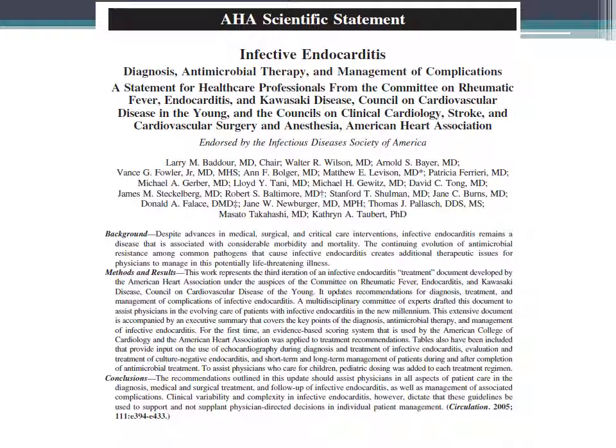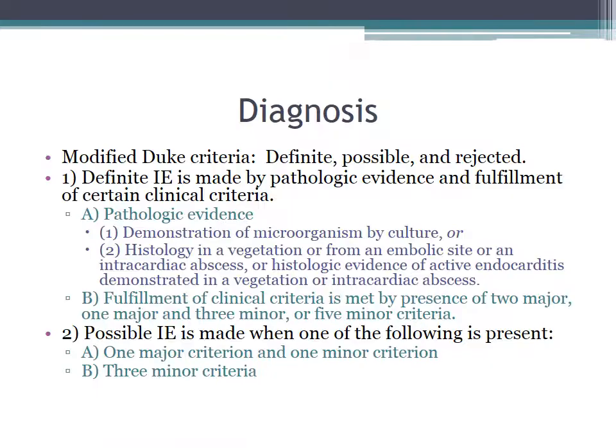Now we'll turn towards the diagnosis of infective endocarditis. I'd like to point your attention to a key article in Circulation 2005, which is an excellent guideline for the diagnosis and management of endocarditis. The modified Duke criteria are commonly used to make the diagnosis of bacterial endocarditis, and it is divided into definite, possible, and rejected.